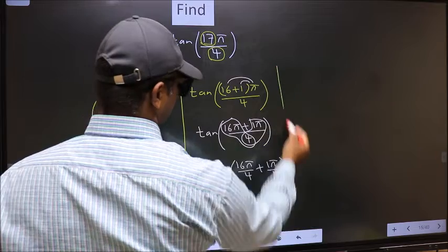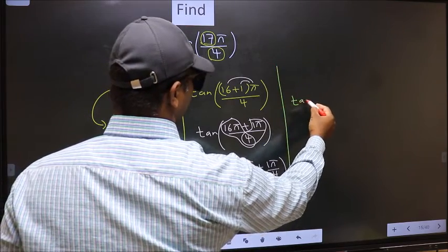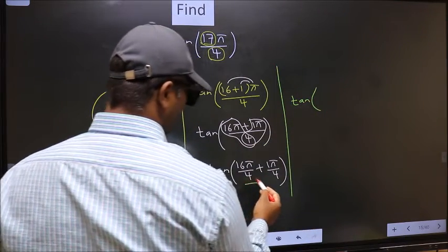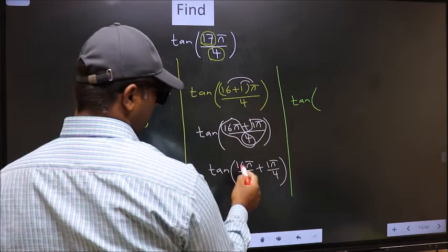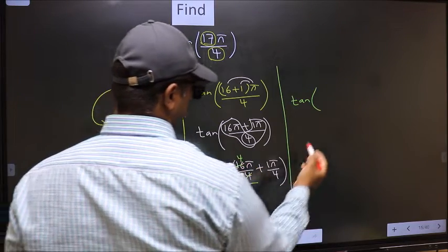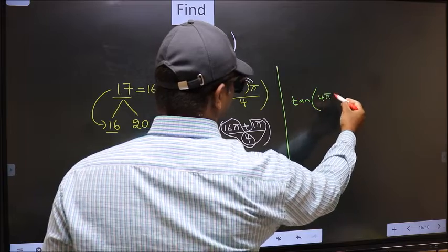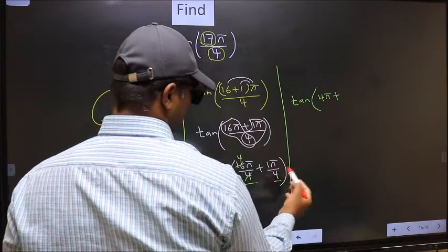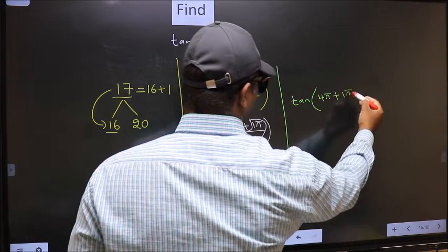Next. Tan. Then, over here, we should cancel. 4 ones, 4 fours. So, we get 4 pi plus this no change, 1 pi by 4.